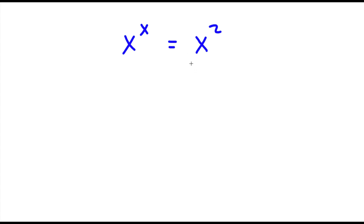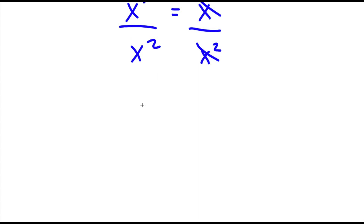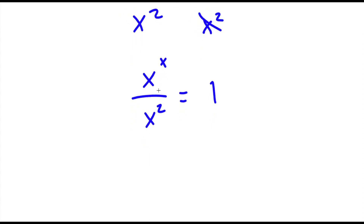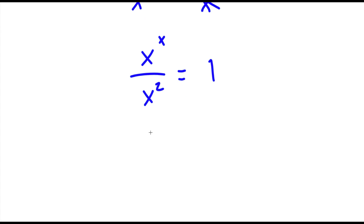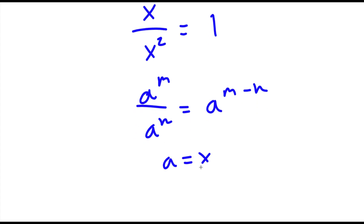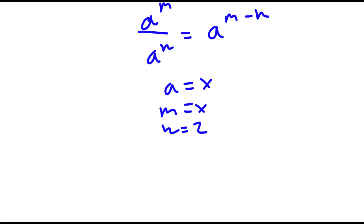Alright, so I have x to the power of x is equal to x to the power of 2. The first thing I'm going to do is divide both sides by x to the power of 2, so those cancel out and I'm left with x to the power of x over x to the power of 2 equals 1. Now using the rule a to the power of m over a to the power of n equals a to the power of m minus n, with a equal to x, m equal to x, and n equal to 2, I get x to the power of x minus 2 equals 1.